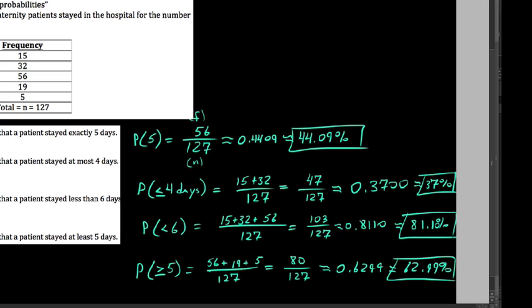So we get that written down here, .6299 is approximately 62.99% chance. It's not bad. It's better than half the time. I wouldn't say better. It's probably not a good thing if you're staying in a hospital five or more days after giving birth. But the five is probably okay.